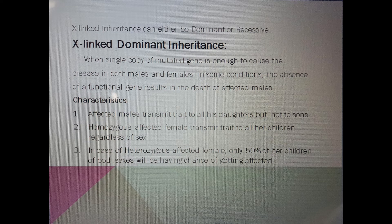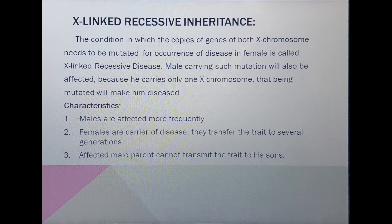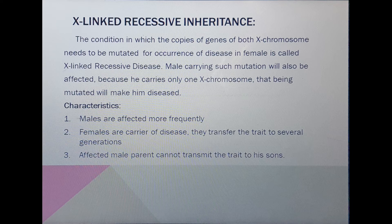Now, X linked recessive inheritance: in dominant disease only one gene is required, but in recessive disease both copies of the gene on both X chromosomes must be affected for the disease to occur in females. In males, only one X chromosome is present, so one mutation is enough to cause disease. This condition where both X chromosomes need to be mutated in females is called X linked recessive inheritance.